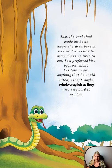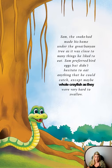Sam the snake had made his home under the great banyan tree, as it was close to many things he liked to eat. Sam preferred bird eggs but didn't hesitate to eat anything he could catch — fish, except maybe whole crayfish, as they were very hard to swallow. You can see Sam the snake with his tongue out, ready to eat. He really liked to eat bird eggs!